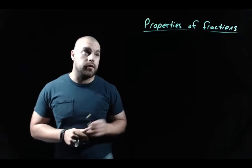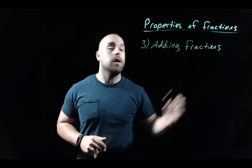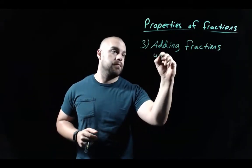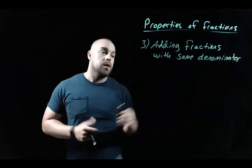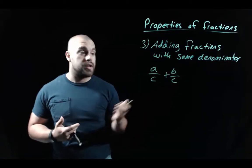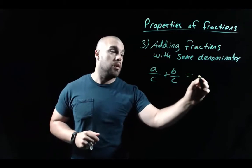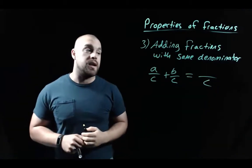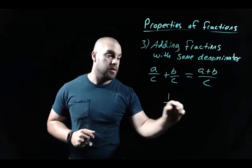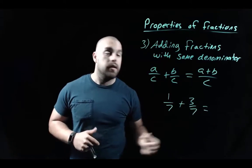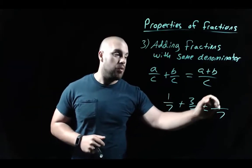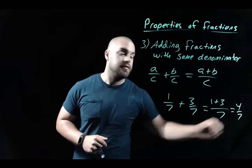Next, adding fractions. When fractions have the same denominator — like a over c plus b over c — we keep that same denominator and just add the numerators: a plus b over c. For example, 1-seventh plus 3-sevenths: we keep the denominator of 7 and add the numerators, 1 plus 3, giving us 4-sevenths.